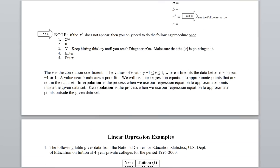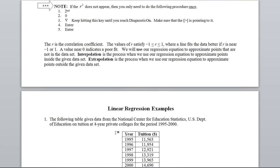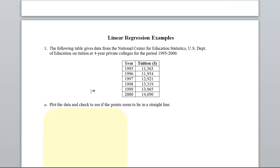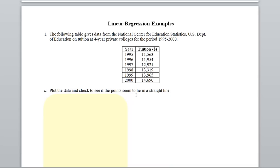So let me go to the next page and we'll look at an example. The following table gives data from the National Center for Education Statistics, U.S. Department of Education on tuition at four year private colleges for the period 1995 to 2000. Some of the problems ask you to plot the data and check to see if the points seem to lie in a straight line. Now it does say the word seem. It will not be perfect.